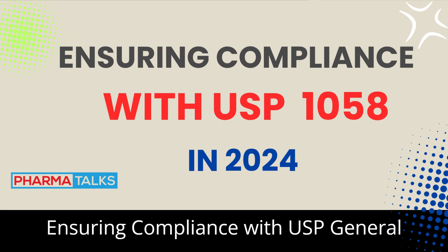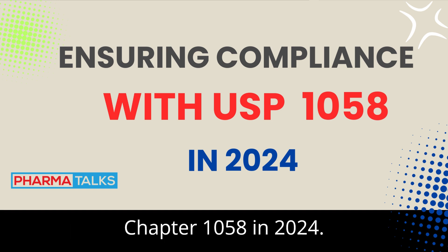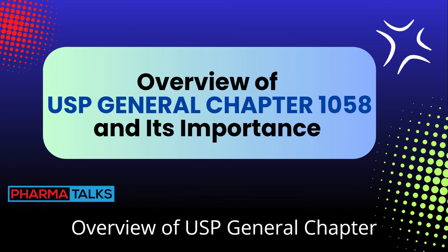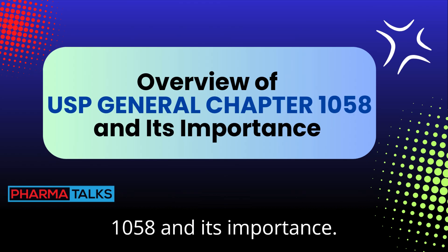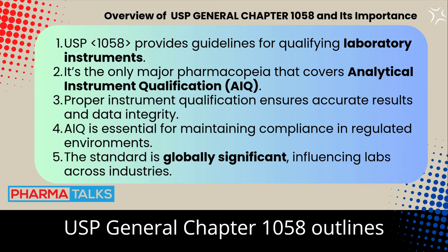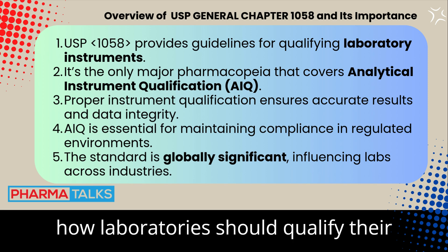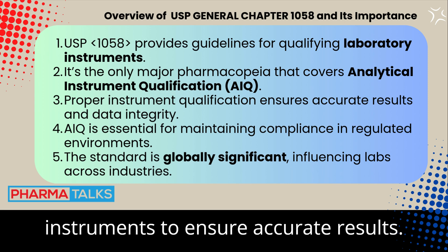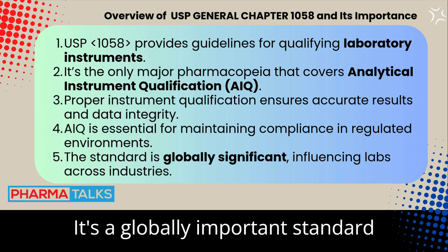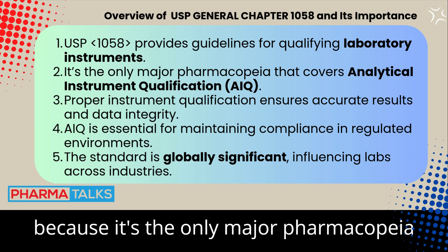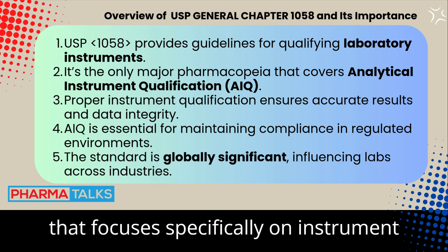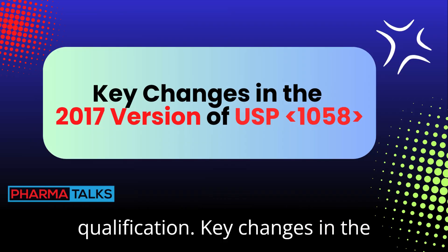Ensuring compliance with USP General Chapter 1058 in 2024. USP General Chapter 1058 outlines how laboratories should qualify their instruments to ensure accurate results. It's a globally important standard because it's the only major pharmacopoeia that focuses specifically on instrument qualification.